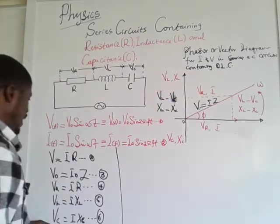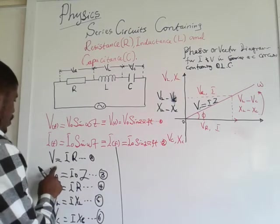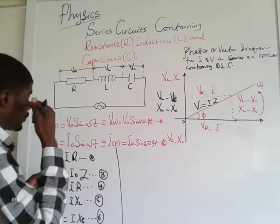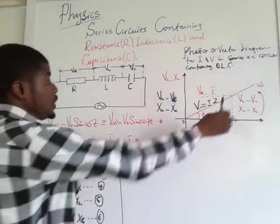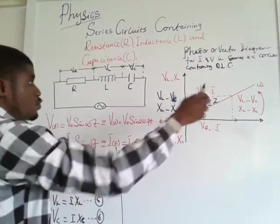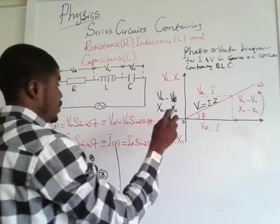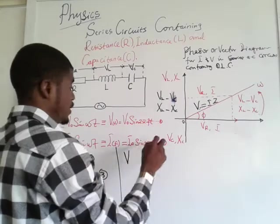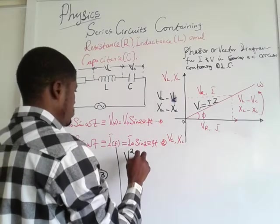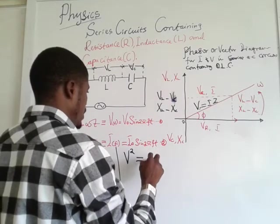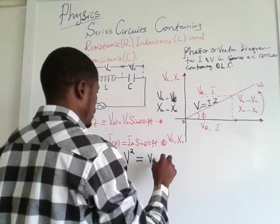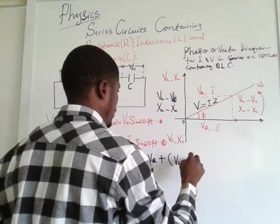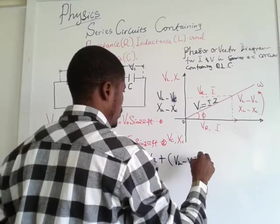We said that V₀ = I₀Z. From Pythagoras' theorem, the total voltage in the circuit is given as: V² = VR² + (VL − VC)². This is equation number eight.